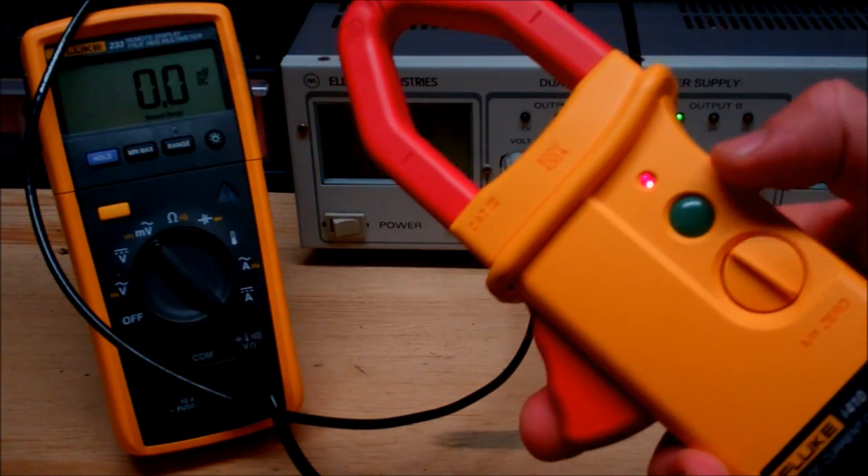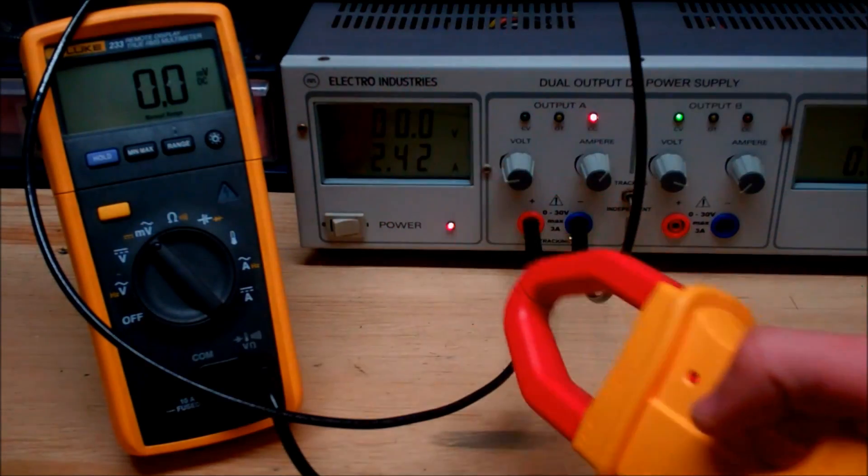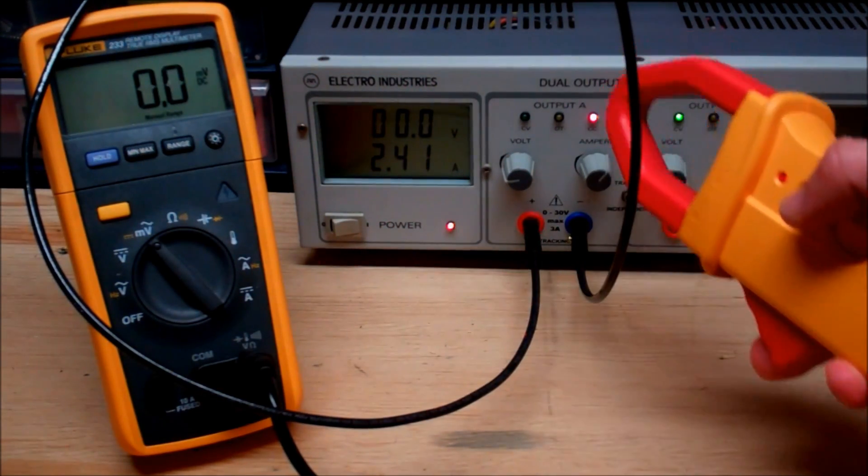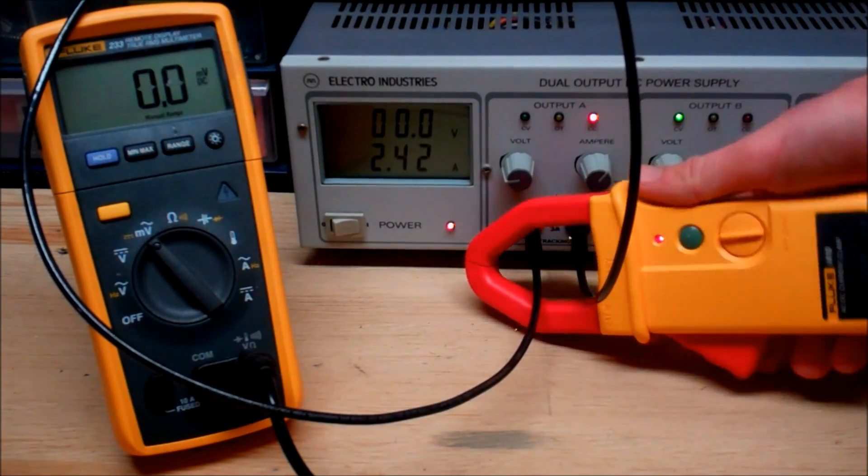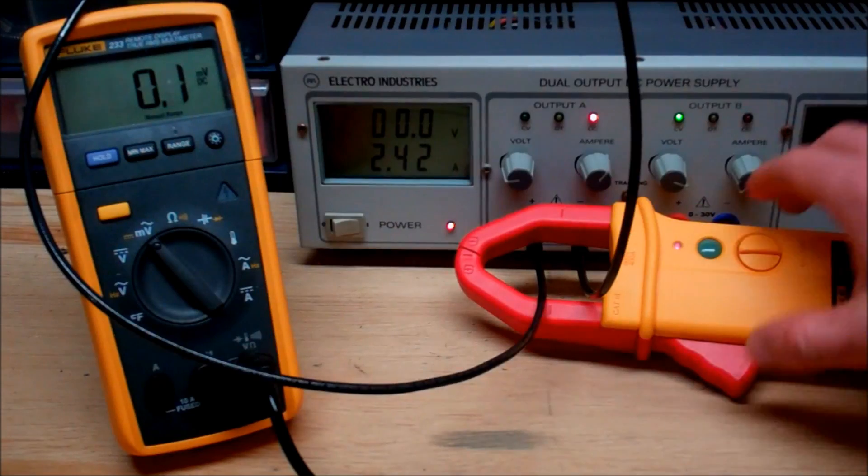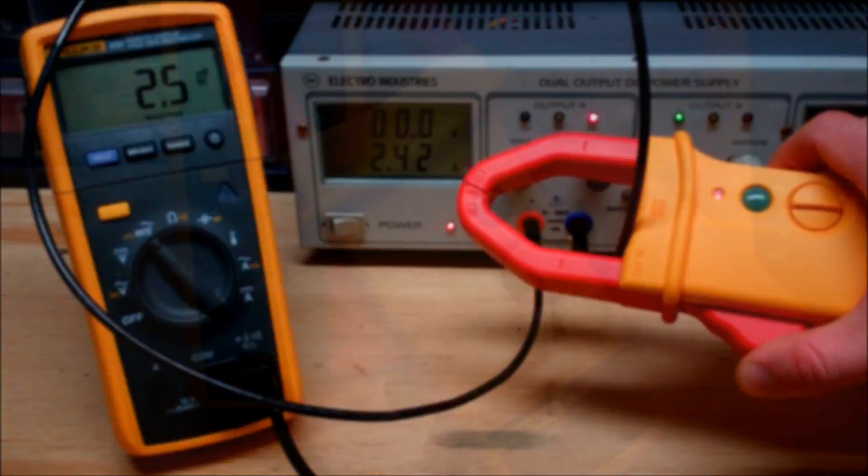Now one limitation to a clamp meter is you can't take a direct reading over multiple power lines. As you can see here I got both positive and negative wires going into the system and it's drawing 2.4 amps. So if I throw this over both cords you can see that my multimeter reading is still zero. Or if I isolate it just to one line you can see that I'm reading a proportional 2.5 millivolts.